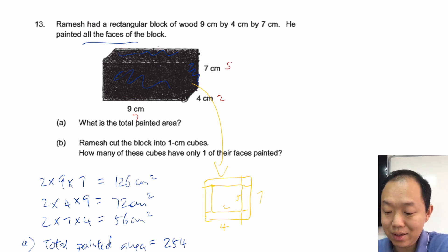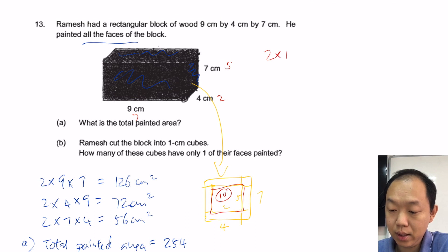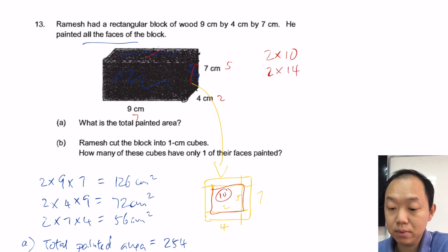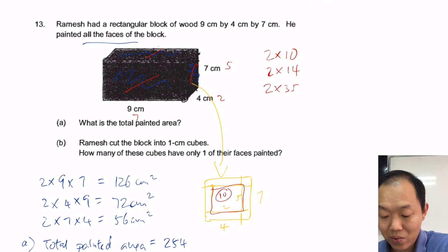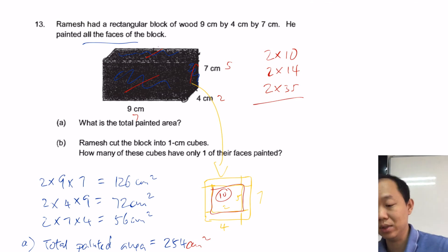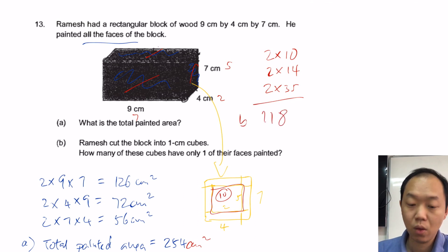So for example, how many of them only have 1 side painted on this face? That's 2 times 5, that's 10. So 2 times 10 because on both sides. Then the top and bottom would be 7 times 2, that's 14, so 2 times 14. And this side would be 7 times 5, so 7 times 5 is 35, and 2 times 35. So the total is 20 plus 28 plus 70, that's 118.